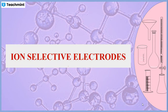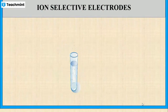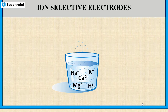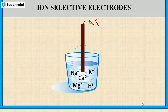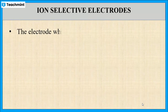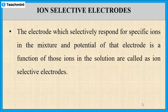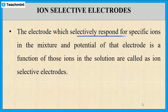In this session I am going to explain about ion selective electrodes. Consider a glass of water that contains so many ions like Na+, K+, Ca2+, Mg2+, H+, and so on. If there is one electrode which is sensitive to particular ions like H+ ions in the mixture, then that electrode is known as an ion selective electrode. An ion selective electrode is defined as the electrode which particularly responds to specific ions in the mixture, and the potential of that electrode is a function of those ions in the solution.